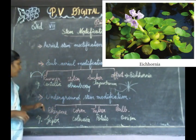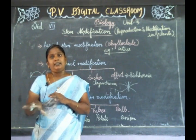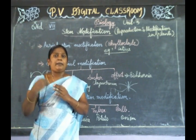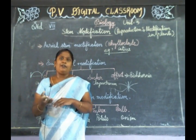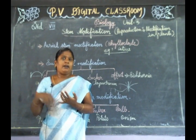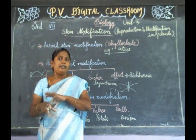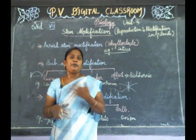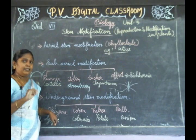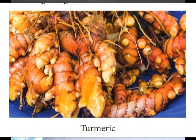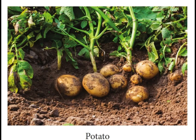Now the third type is the underground stem modification. The stem is buried under the soil. There are four types of underground modifications: the first one is the rhizome — examples are banana, ginger, and turmeric. The next one is the corm — example is colocasia. Then the tuber — example is potato. And the bulb.